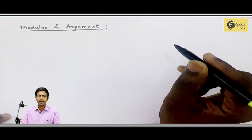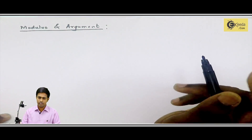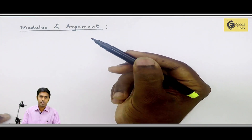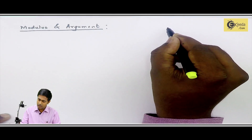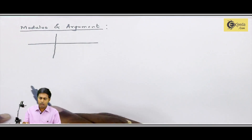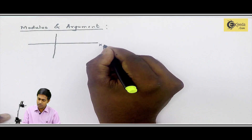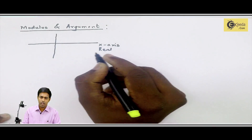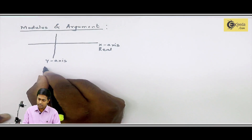We can represent any complex number in geometry using the x and y axes. Let's consider a complex number as a point. Here, I am drawing two axes — this is the x-axis, which is called the real axis, and this is the y-axis, which is also called the imaginary axis.